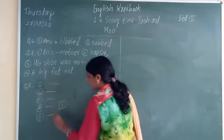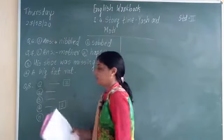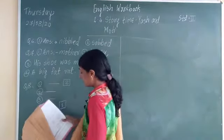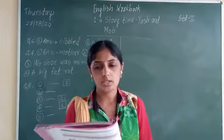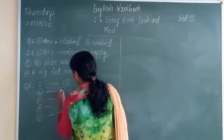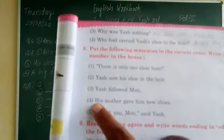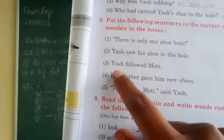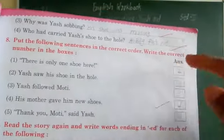The second sentence in sequence is 'There is only one shoe here.' The third sentence is 'Yes followed Moti.' The fourth sentence is 'Yes saw his shoe in the hole.' And the fifth sentence is 'Thank you Moti, said Yes.' So the correct order is: mother gave shoes, only one shoe, Yes followed Moti, Yes saw shoe in hole, thank you Moti.